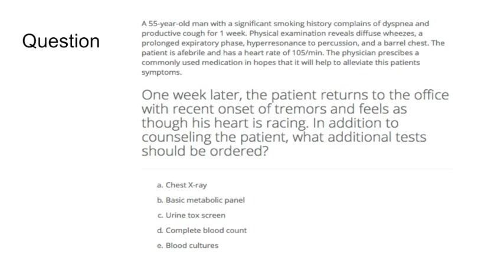The first step is to recognize what disease is being treated — wheezing, prolonged expiratory phase, and hyperresonance to percussion. The second step is understanding the first-line treatment for that disease, since the physician prescribed a commonly used medication. The third step is understanding the side effects of the medication. The patient has recent onset of tremors and feels his heart is racing — that's the side effect. The fourth step is recognizing how to monitor or treat these side effects. This is what's called a multi-layered question, and the goal is to integrate a lot of things together.